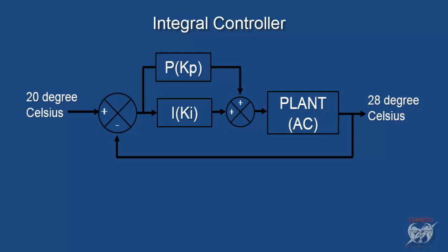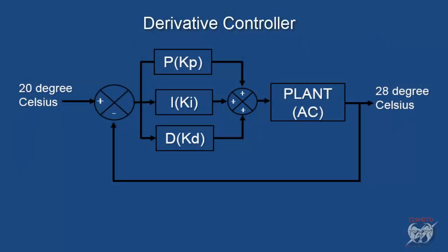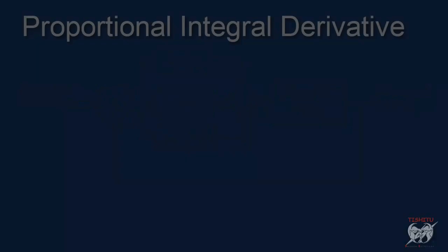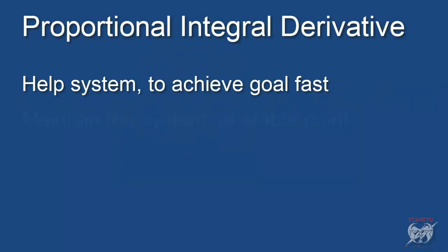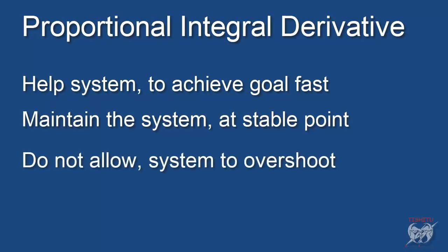But in this case now plant may get overshoot due to continuously integrate itself. So we use derivative controller along with them which do not allow the system to overshoot. In this way this controller work to reduce the effect of integral controller after once system achieve goal. So PID controller work in that way. It try to achieve goal fast. Maintain the system across stable point. Do not allow the system to overshoot.